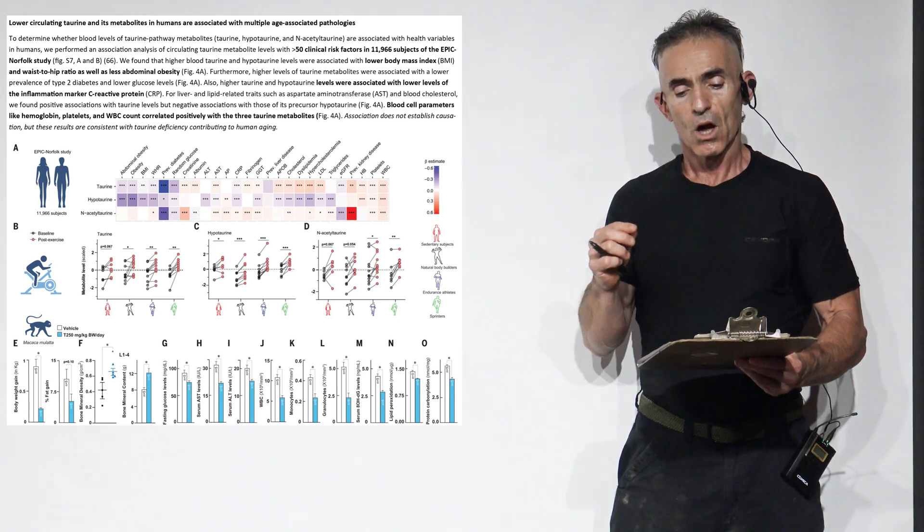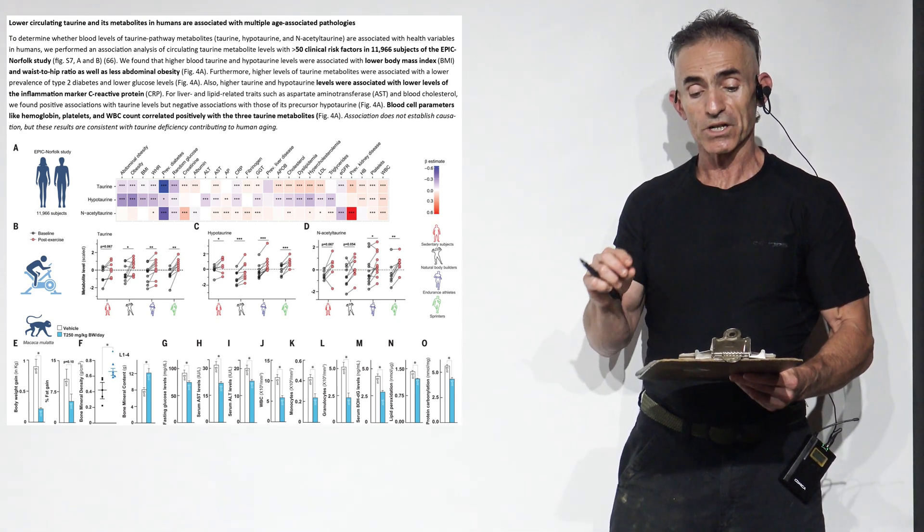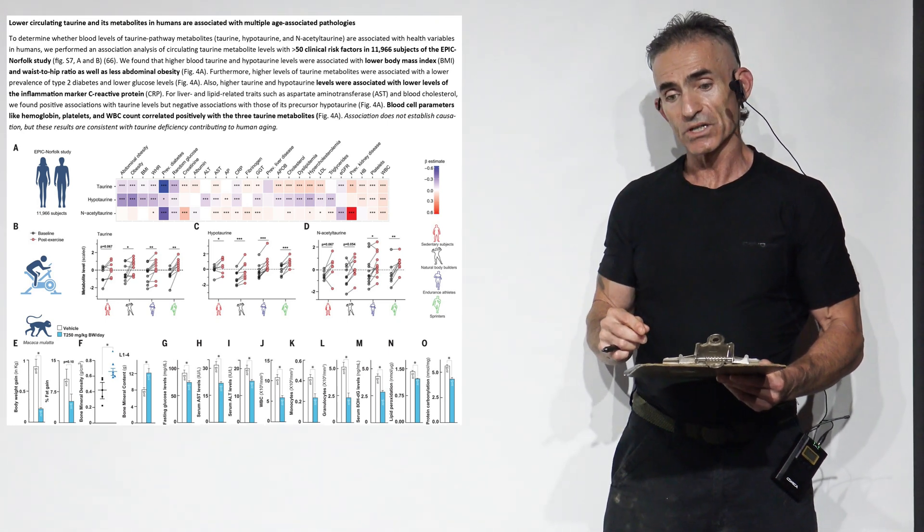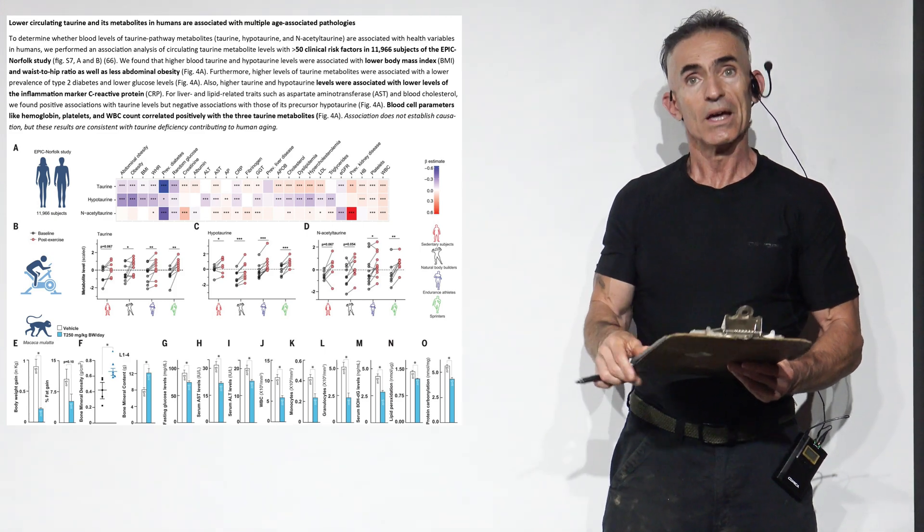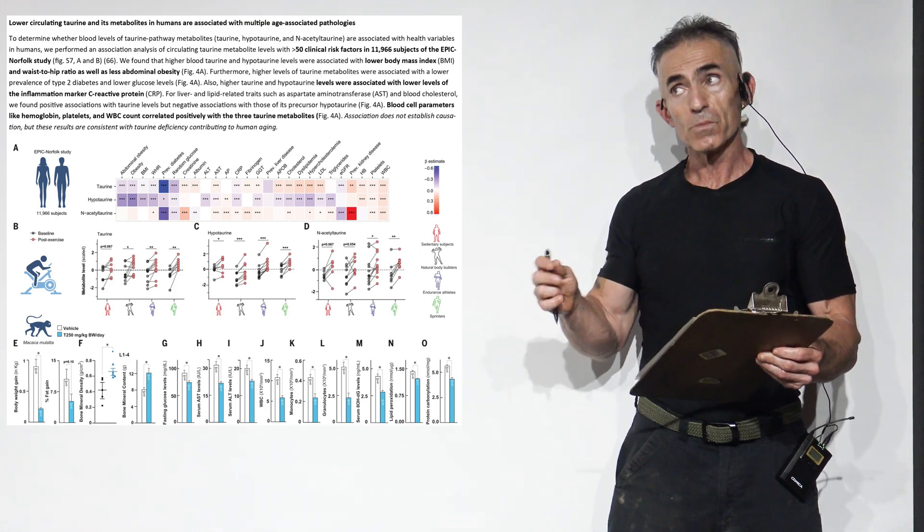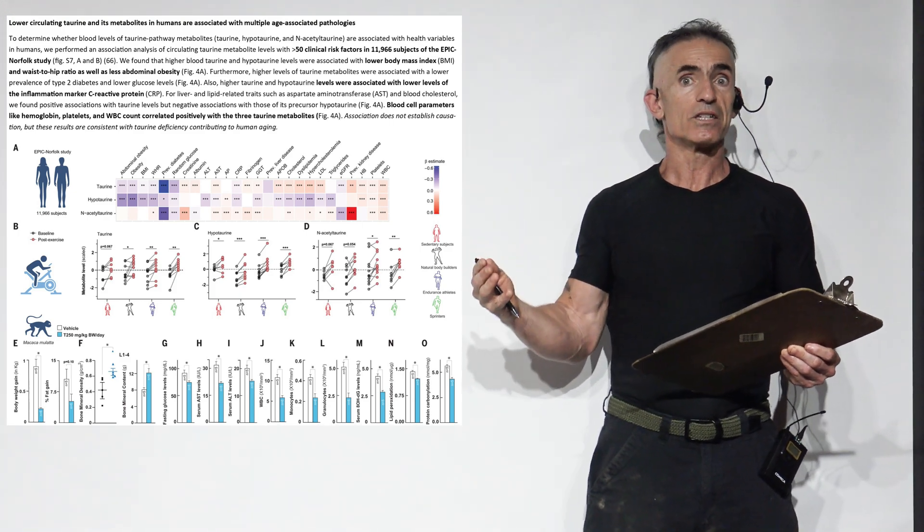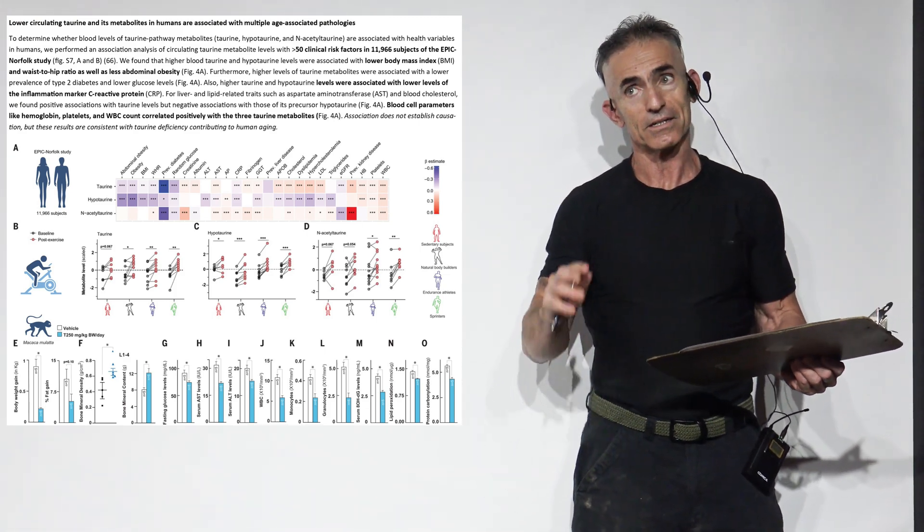I know the mental ability to want it to gravitate towards hypo being low, but in this case, hypotaurine is a metabolite, and N-acetyltaurine are associated with health variables in humans. We performed an association analysis of circulating taurine metabolite levels with over 50 clinical risk factors in 11,966 subjects of the EPIC-Norfolk study.